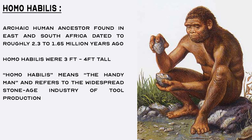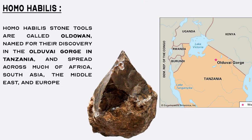Homo habilis is the name given to the species of archaic human ancestors found in east and south Africa, dated to roughly 2.3 to 1.65 million years ago. The name Homo habilis means the handyman and refers to the widespread stone age industry of tool production and use amongst this genus Homo. These stone tools are called Oldowan, named for their discovery in the Olduvai Gorge in Tanzania, and spread across much of Africa, South Asia, the Middle East, and Europe. These early stone tools were simple, usually made with one or a few flakes chipped off with another stone.